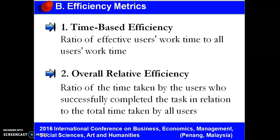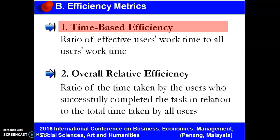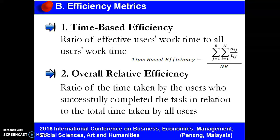For efficiency metrics, like effectiveness, efficiency is also affected by the kind of user, task, and technology used by the system under study. It can be calculated in one of two ways: time-based efficiency or overall relative efficiency. Time-based efficiency refers to the ratio of effective users' work time to all users' work time. In the formula, N refers to the total number of tasks, R refers to the number of users, N sub ij refers to the result of task i by user j — equal to 1 if successfully completed, otherwise 0 — and T sub ij is the time spent by user j to complete task i; if the task is not successfully completed, time is measured until the moment the user quits the task.